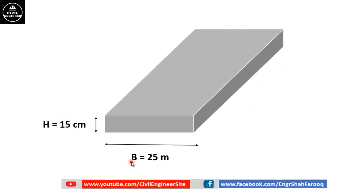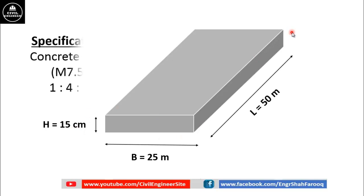For this purpose, we have selected a PCC floor having width 25 meters, thickness 15 centimeters and length 50 meters. Here, concrete used is M7.5 concrete and we know that the ratio of M7.5 concrete is 1:4:8. Here, 1 represents cement ratio, 4 represents fine aggregate or sand ratio, and 8 represents coarse aggregate or crushed stone.